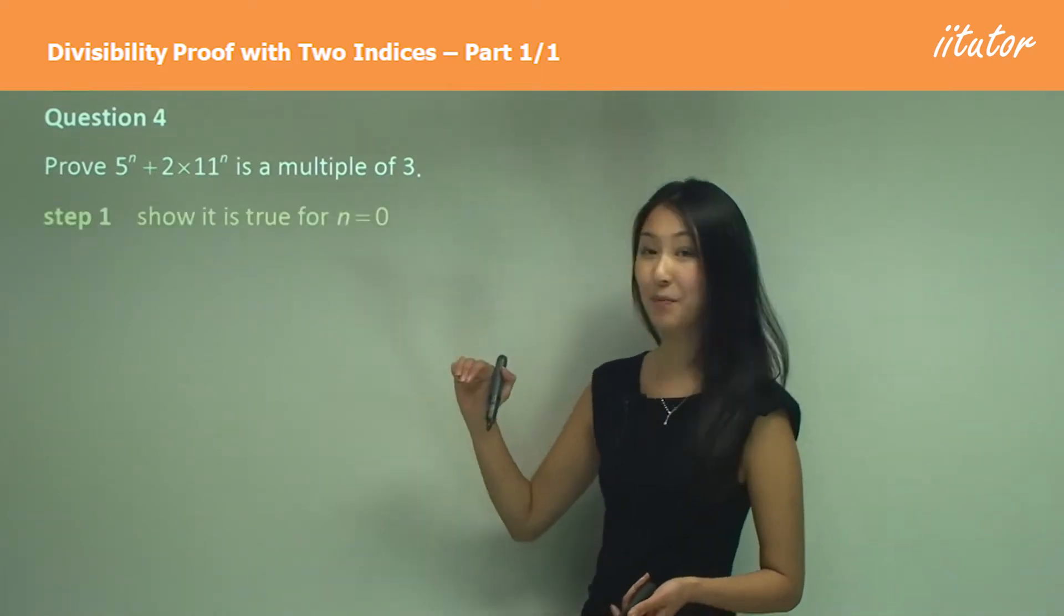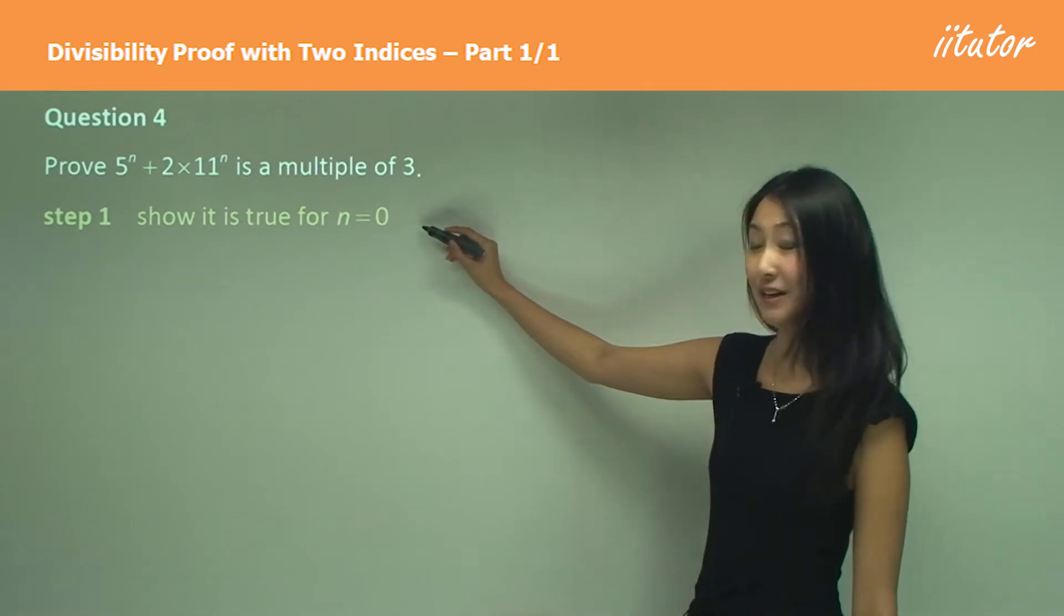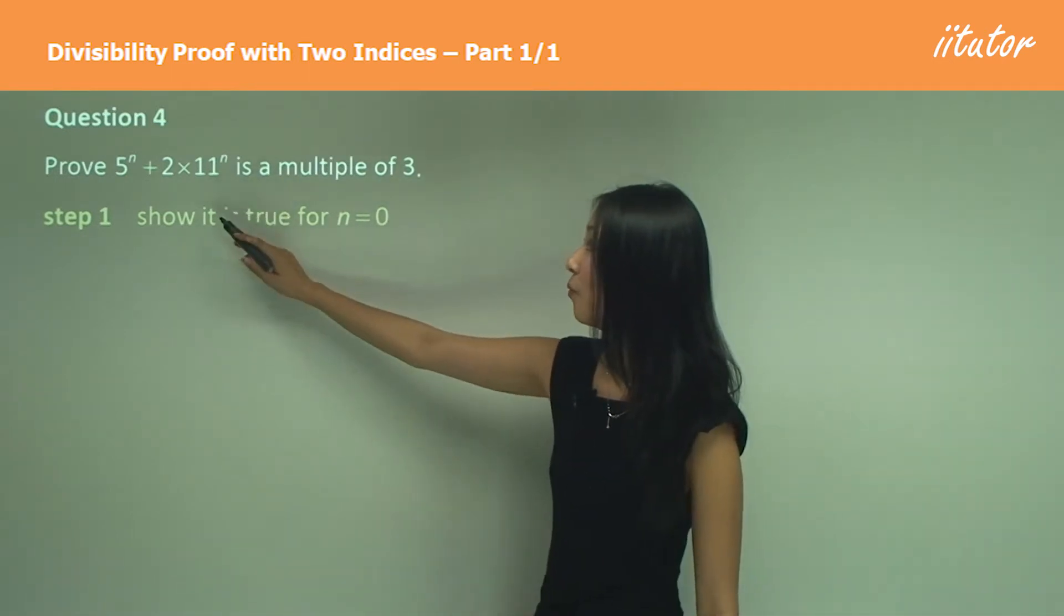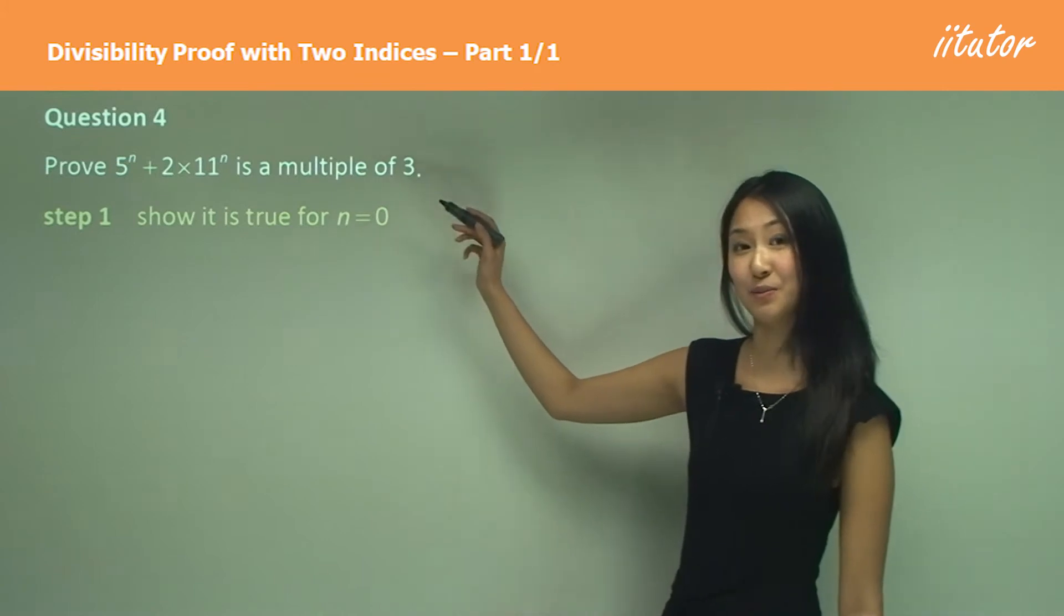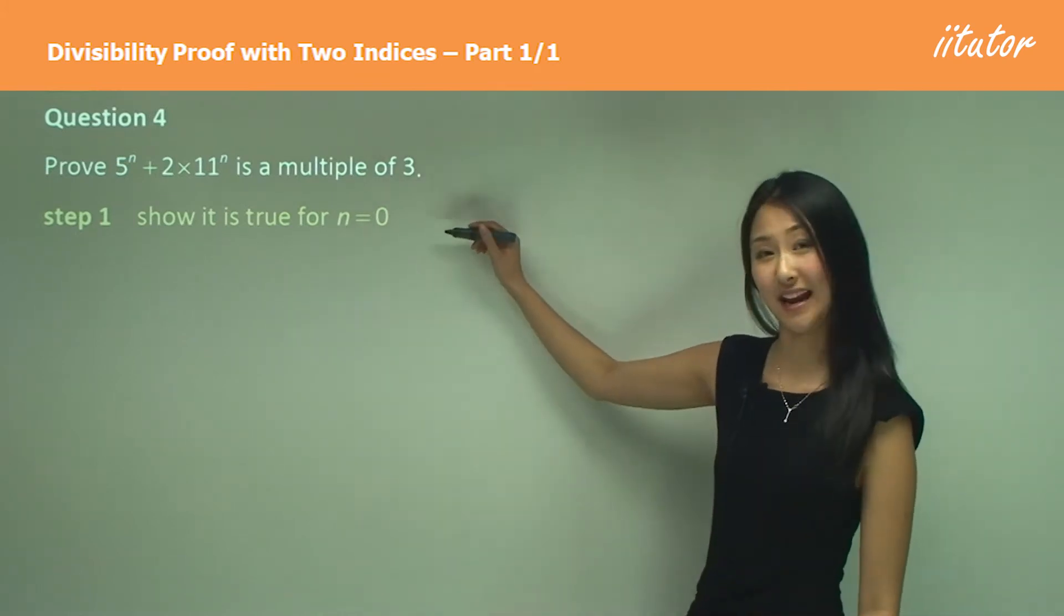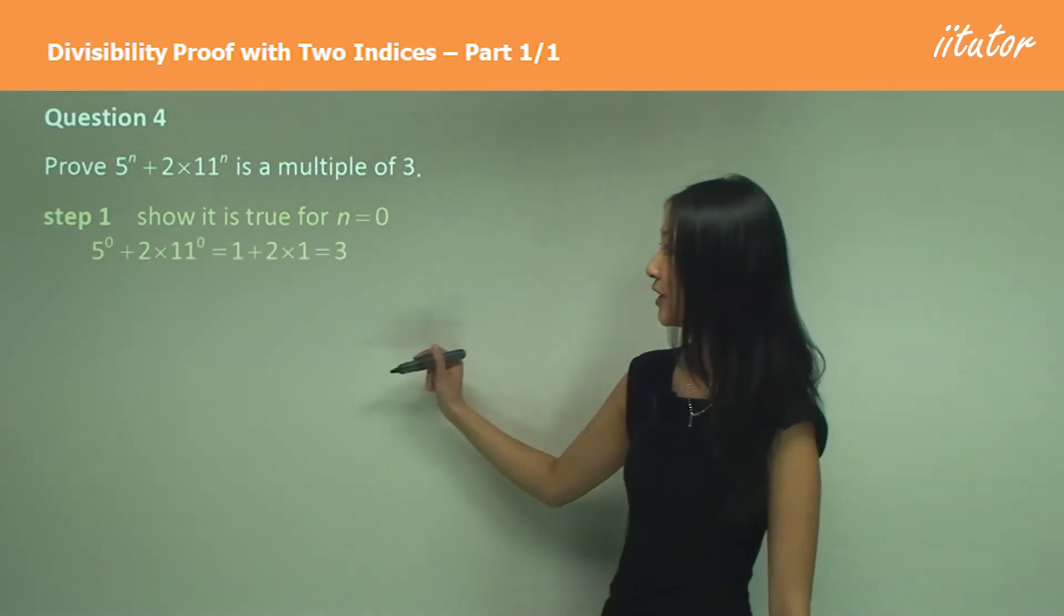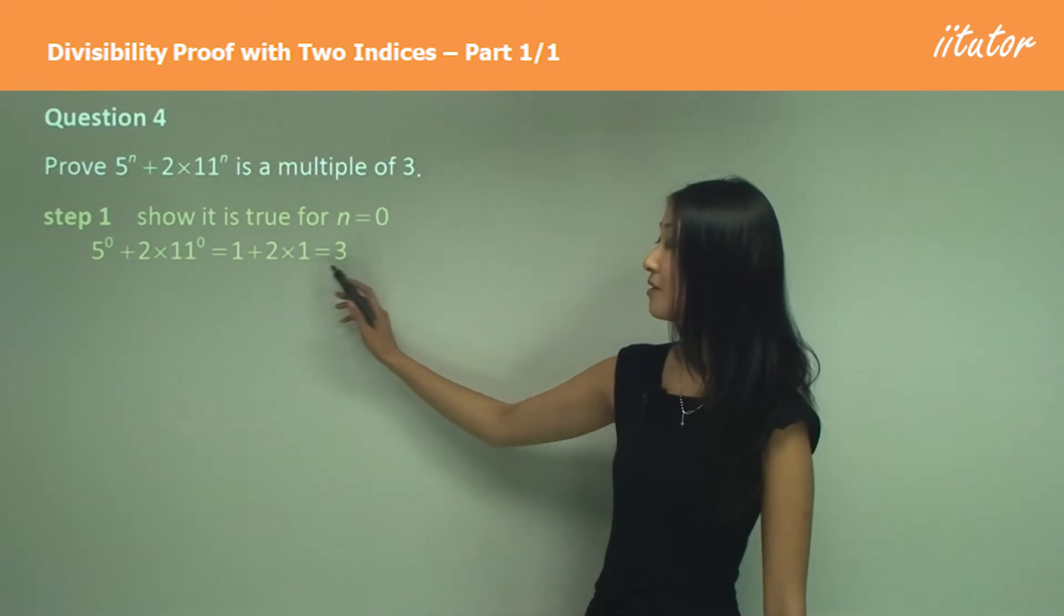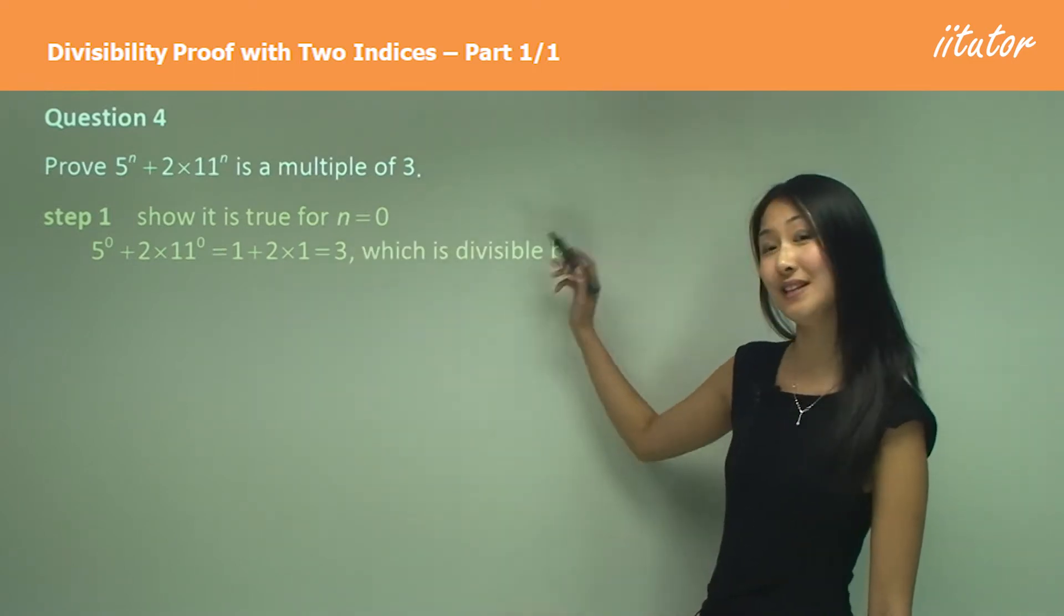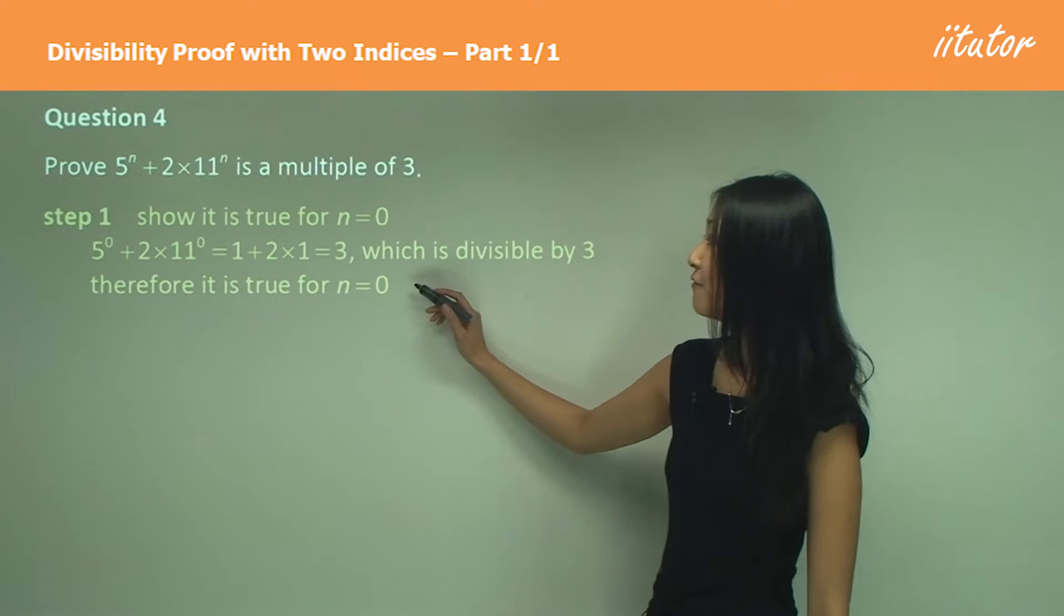For step 1, when we try n equals 0, we have 1 plus 2 which is a multiple of 3. Substituting it in, 1 plus 2 equals 3, which is divisible by 3, so therefore it is true for n equals 0.